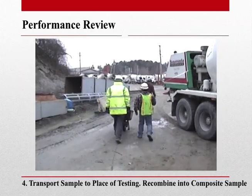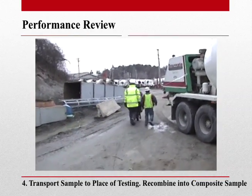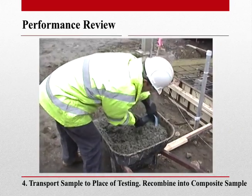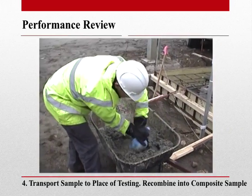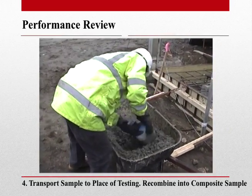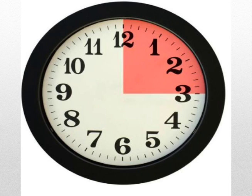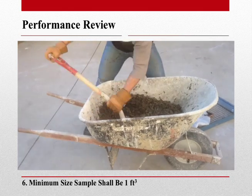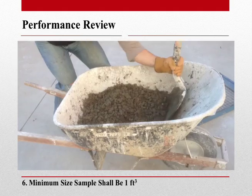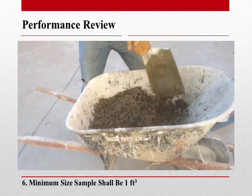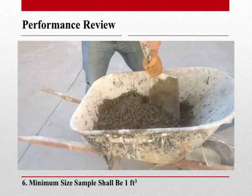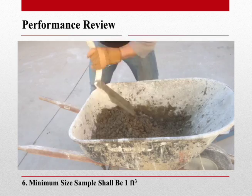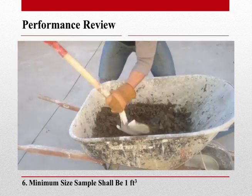We obtain the sample by repeatedly passing our receptacle through the discharge stream or by completely diverting the discharge stream into the sample container. We can now transport our sample to the initial place of testing. Once there, we want to recombine our sample into a composite sample. Remember that the first and final portion of the batch must be obtained within 15 minutes. Since the molding of strength specimens is required during the performance review, the sample you obtain must be at least one cubic foot.